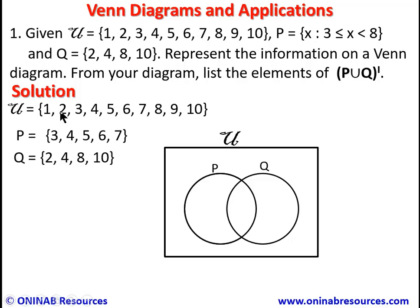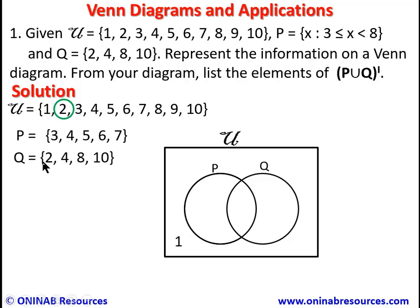We start the representation from the universal set. 1 is neither in P nor Q, so it goes anywhere within the rectangle but outside the two circles. 2 is in Q but not in P, so it is placed within the circle of Q but not in the intersection with P.